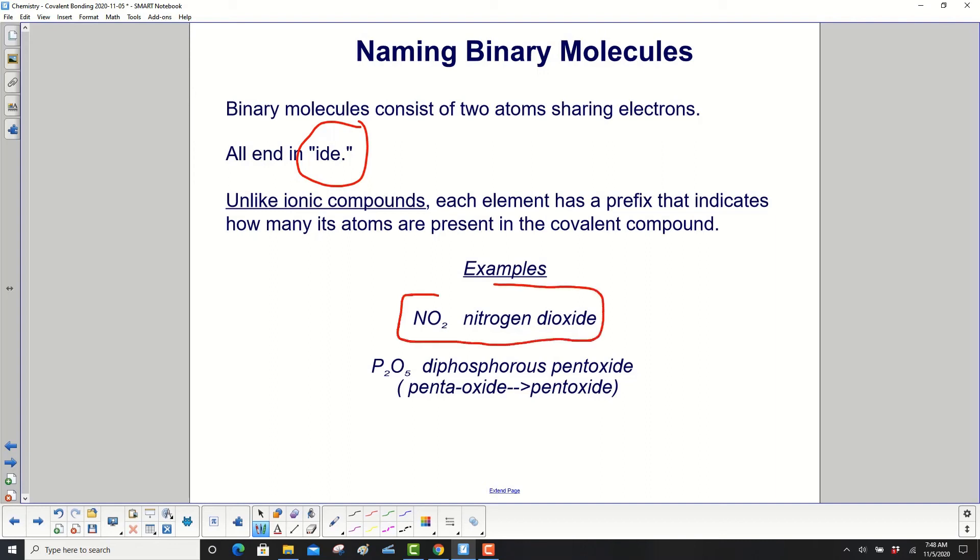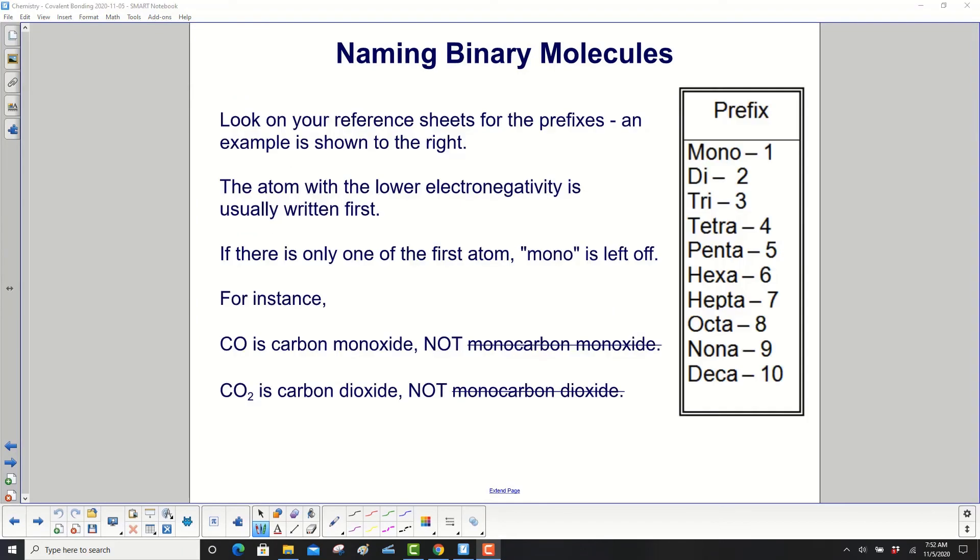Examples. Nitrogen dioxide. Diphosphorus pentoxide. Pentaoxide - instead of saying that, you just say pentoxide. Look on your reference sheets for the prefixes. An example is shown to the right.